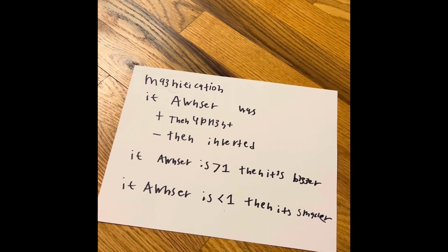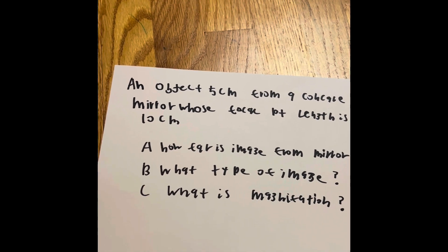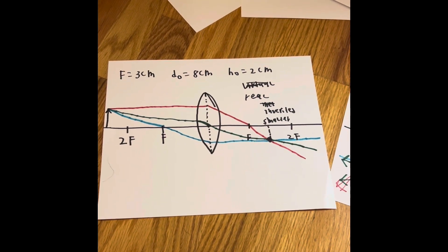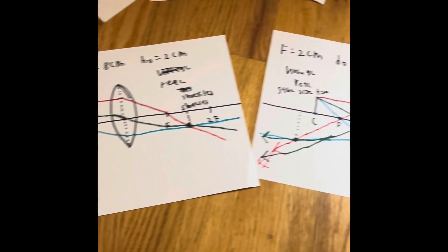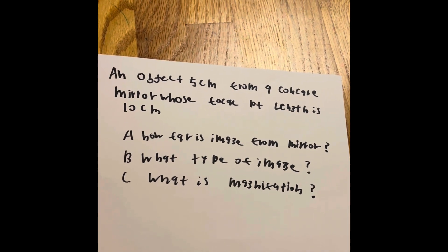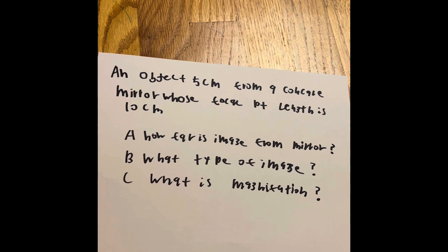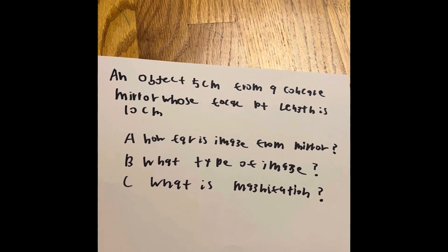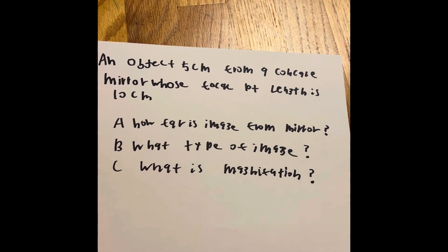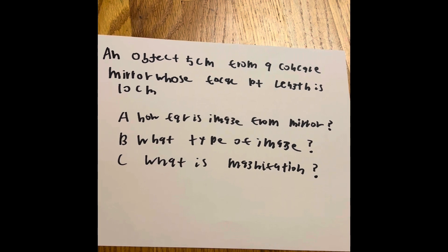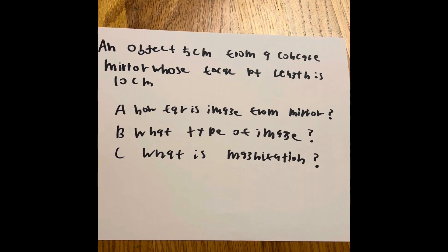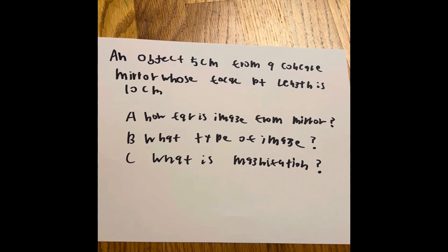Right here is a problem. Normally we are trying to actually refer to the problems because sometimes your test or your assessment will make you do this part before actually checking your answer. An object is five centimeters away from a concave mirror, whose focal point is a length of 10 centimeters. Three things: How far is the image on the mirror? What type is the image? And what is the magnification?